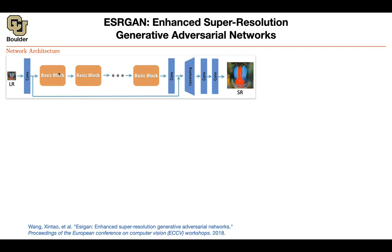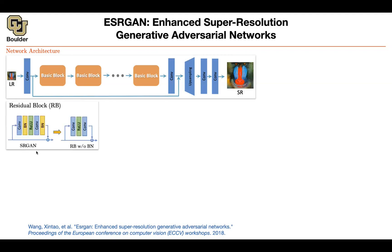But before we do so, what are these basic blocks? Super Resolution GAN, the paper we just covered, has layers of convolution, batch norm, ReLU, convolution, batch norm, and the residual connection. This paper says that batch norm — you don't need it, it reduces the quality — so let's just remove batch norm. That's one contribution.